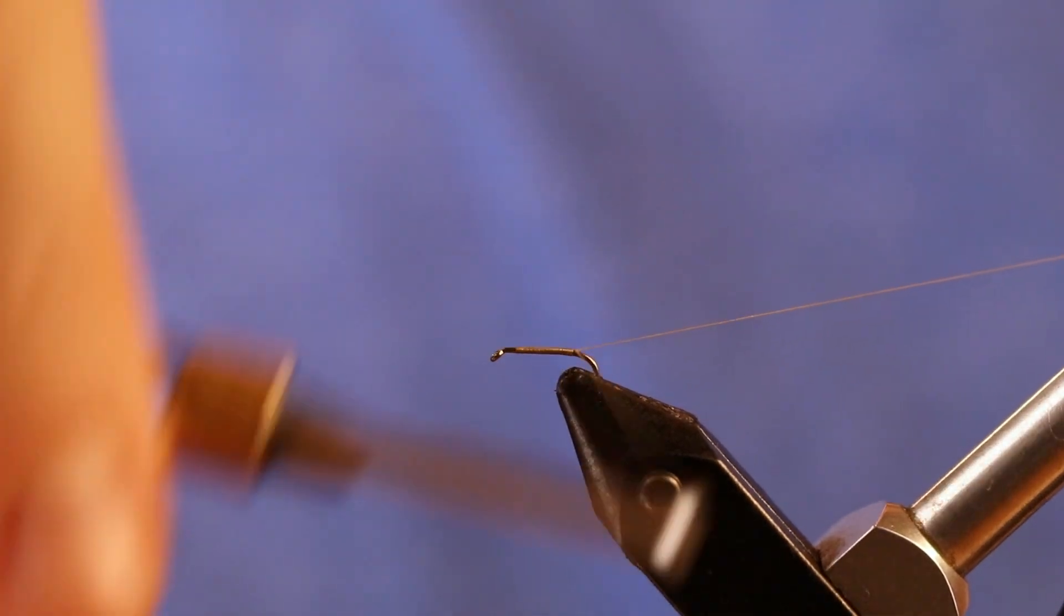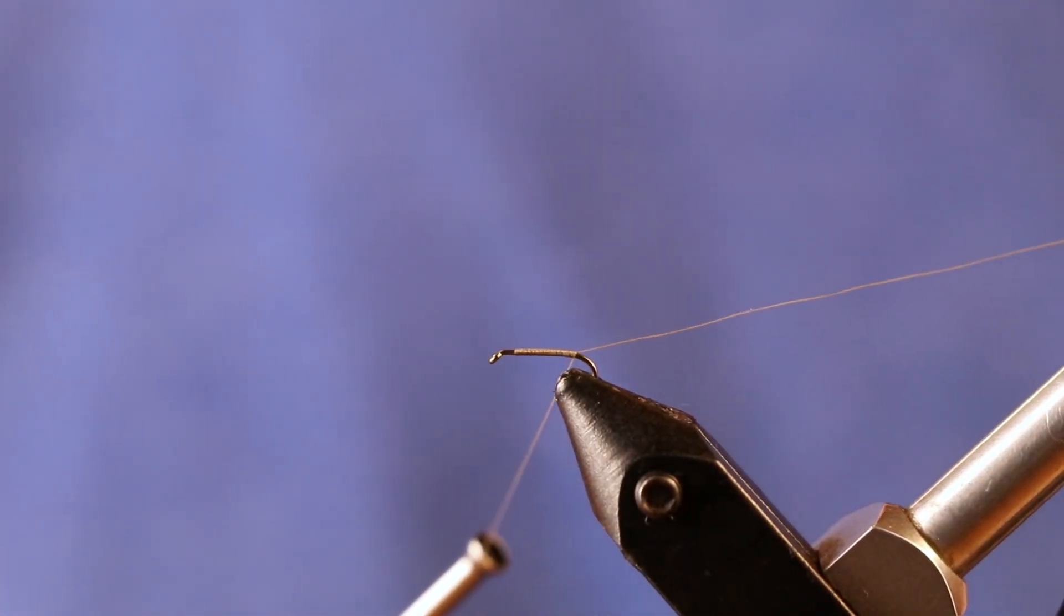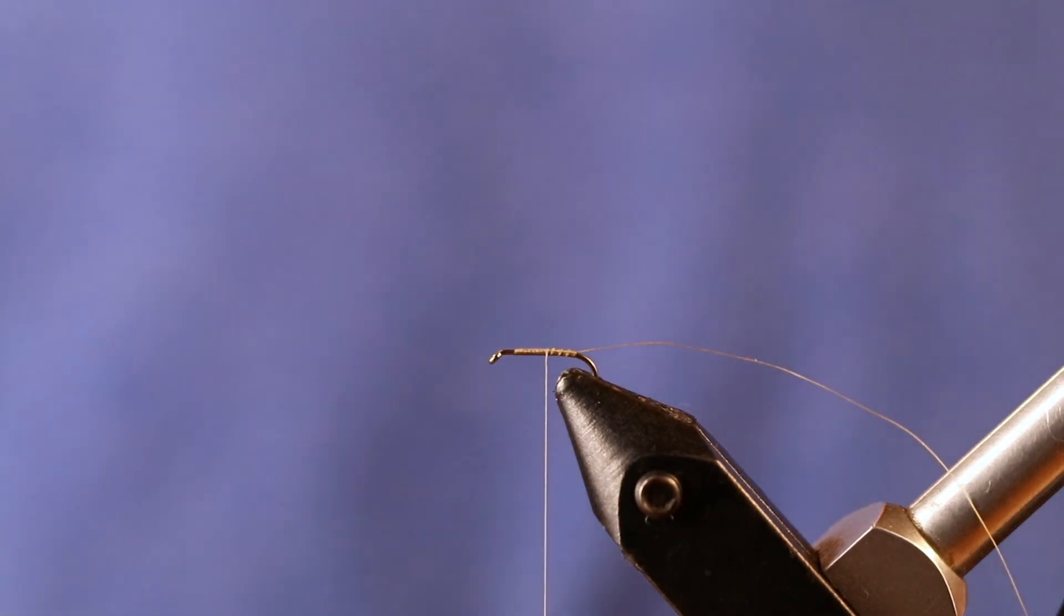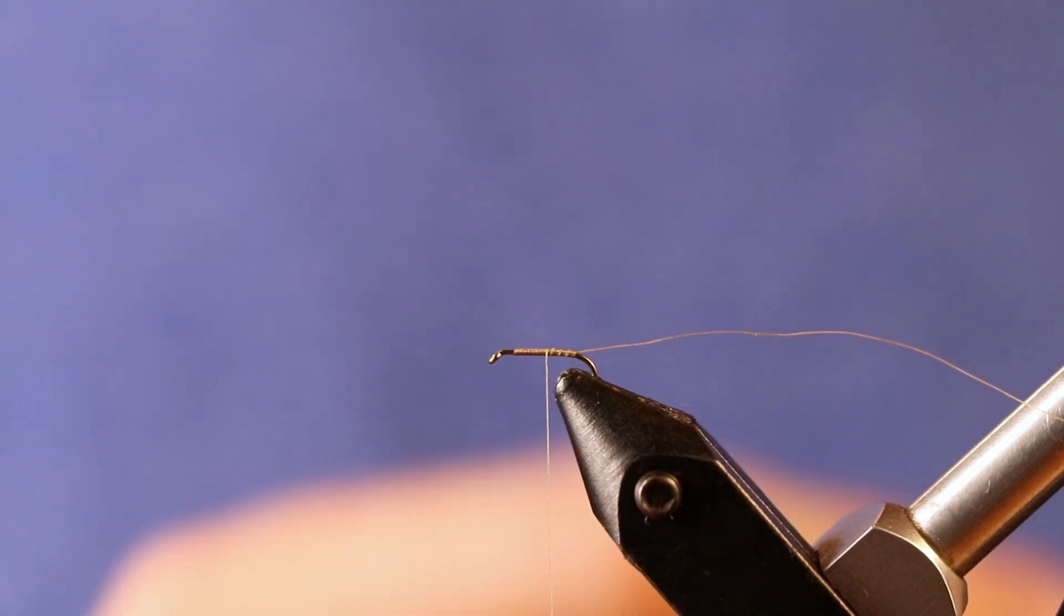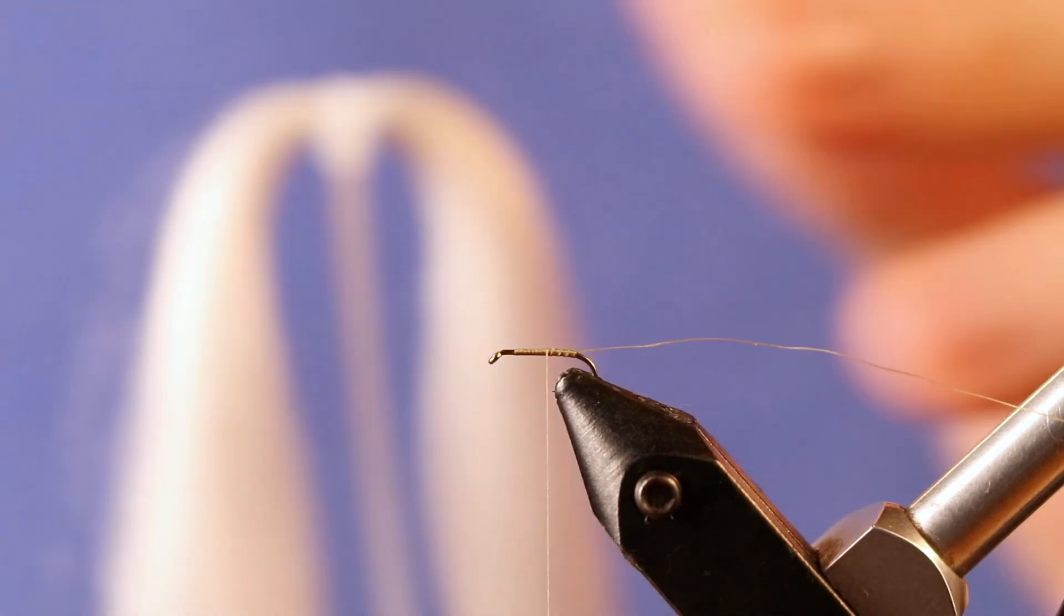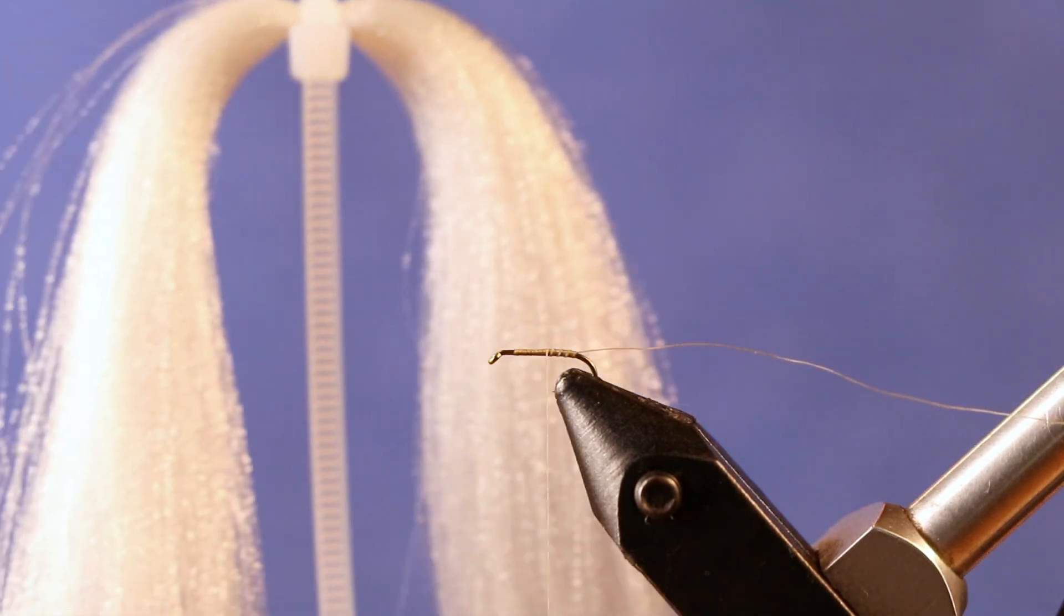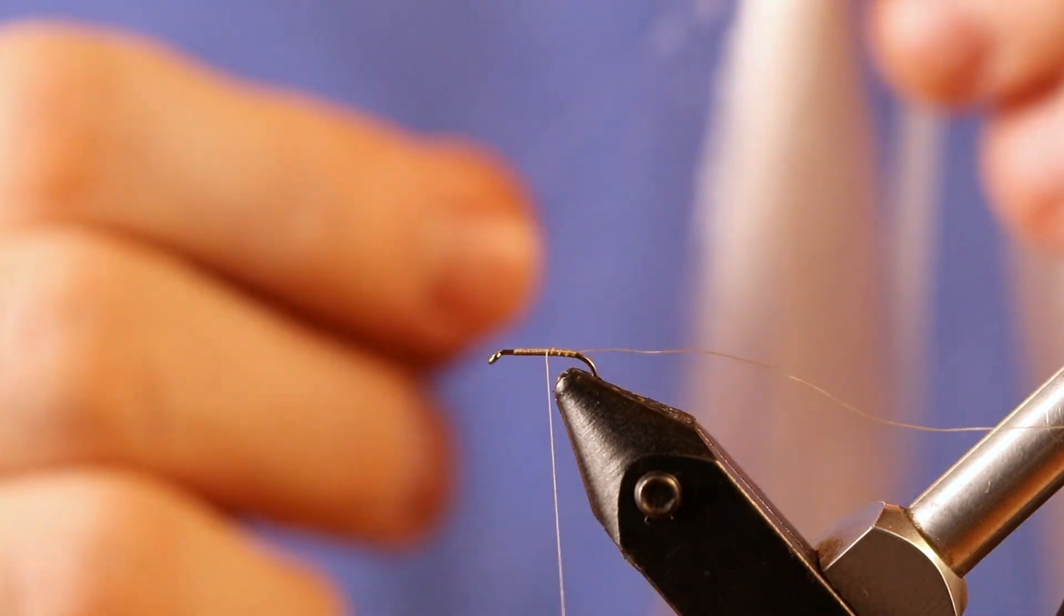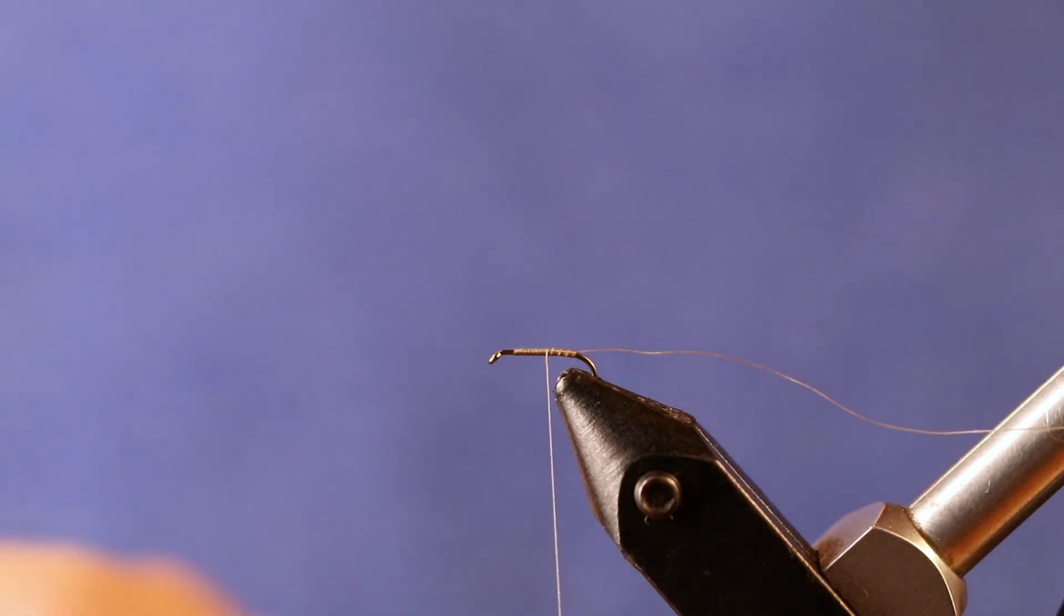We're going to use that in just a little bit. I'm going to stop right before I get to the bend of the hook, come forward about three or four wraps. You can drop that tag end for the time being because we're going to tie in our tail material. This is called fluorofiber, a really shimmery, sparkly material, and the links to all these materials are in the description below.